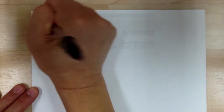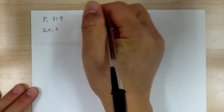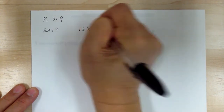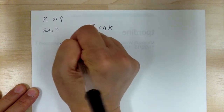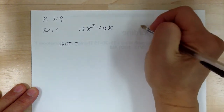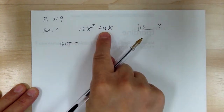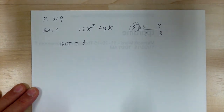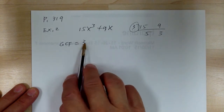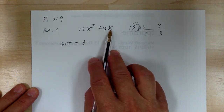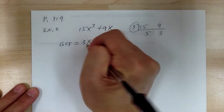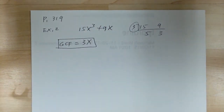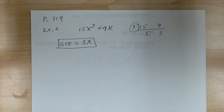Now let's go to example 2, where you start getting variables. You've got 15x³ plus 9x. You're looking for the GCF among those two terms. First look at the numbers: 9 and 15 — the GCF is 3. Then go to the variable: you've got x³ and x. For the GCF you take the lowest one, which is x. So the GCF is 3x. That's what you need to factor out.